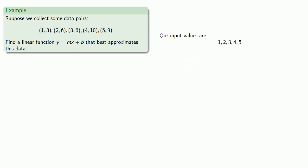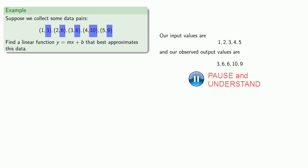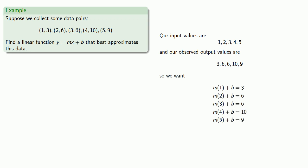And our corresponding observed output values are going to be 3, 6, 6, 10, and 9. And in a perfect world, we want the linear function to give us exactly these output values. And so we'll peel off our coefficient matrix A, our matrix of variables x, and our matrix of constants b.